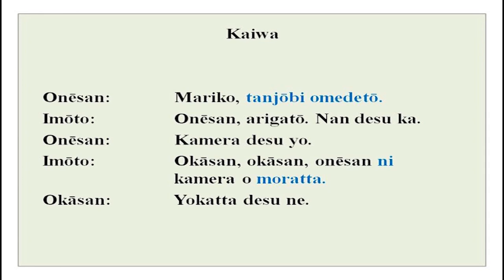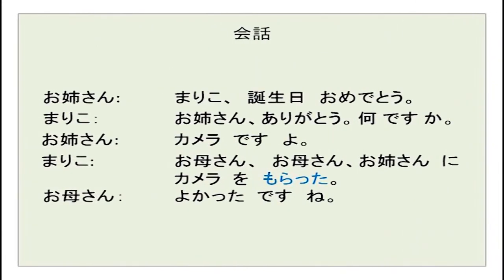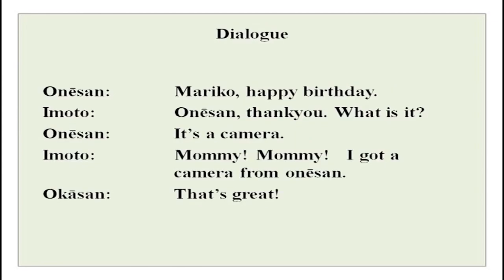Oneesan is elder sister. Imoto, of course you already know, is younger sister. And then there is another person — okaasan. So actually this conversation is between three people. Kaiba is conversation. There are a few expressions here which I will explain. This is what you would say in English when you get a present.